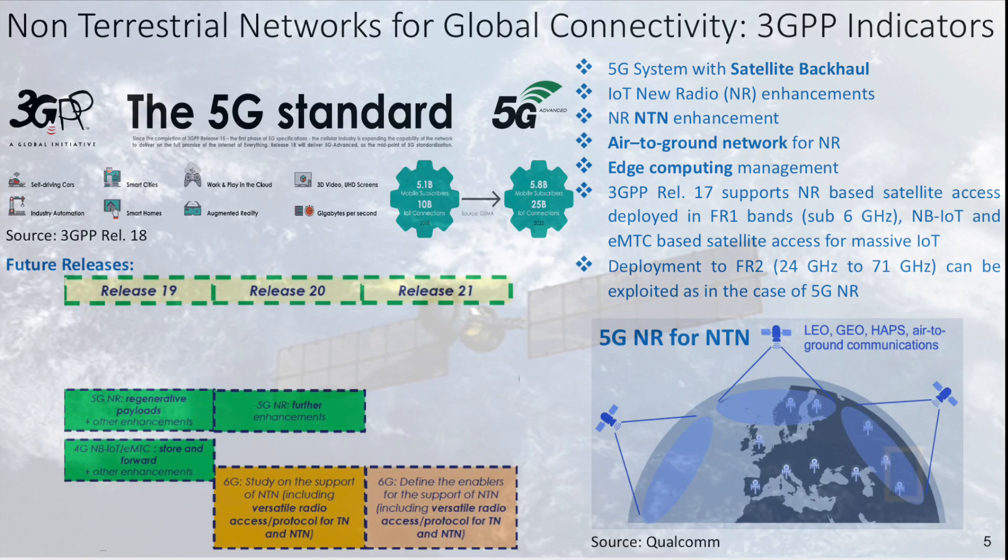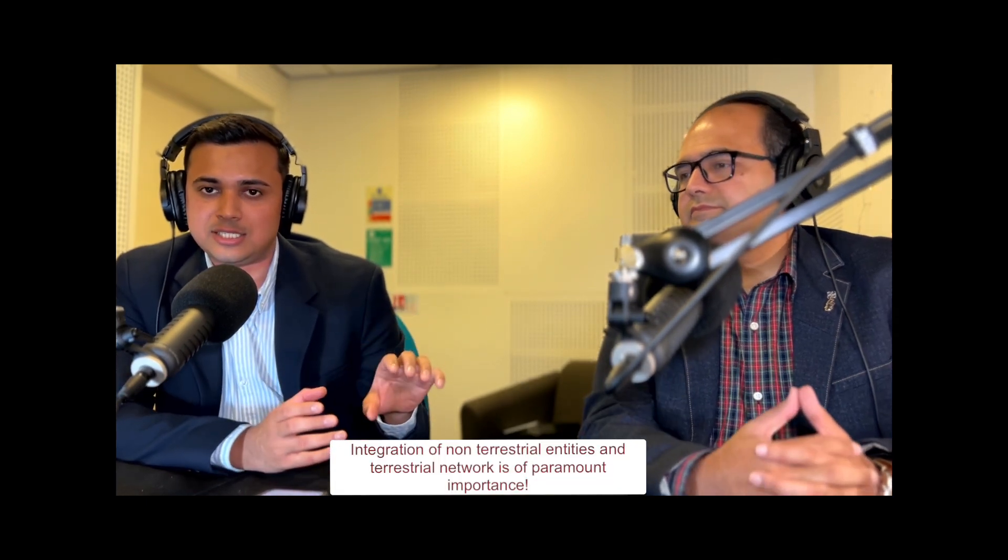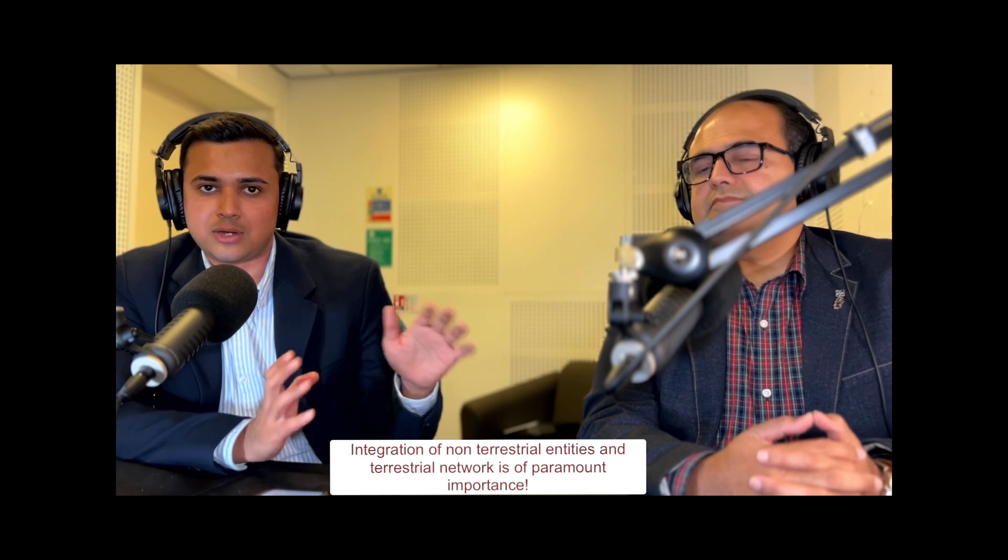Non-terrestrial networks is something that is quite hot at the moment, especially when we talk about 5G advanced and 6G services. Non-terrestrial networks have many entities — you can go from LEO satellites, GEO satellites, and also include hot air balloons, UAVs — unmanned aerial vehicles — and any sort of flying platforms. These different entities can be integrated with the ground network as well.